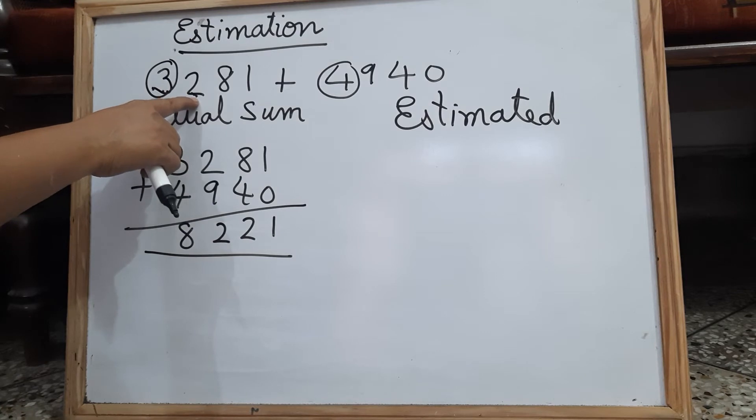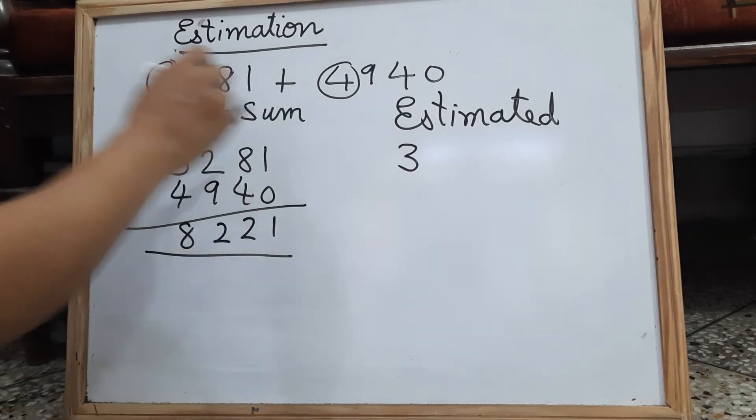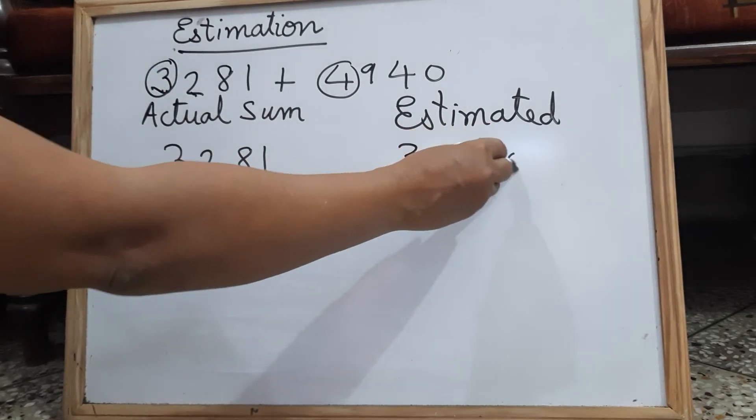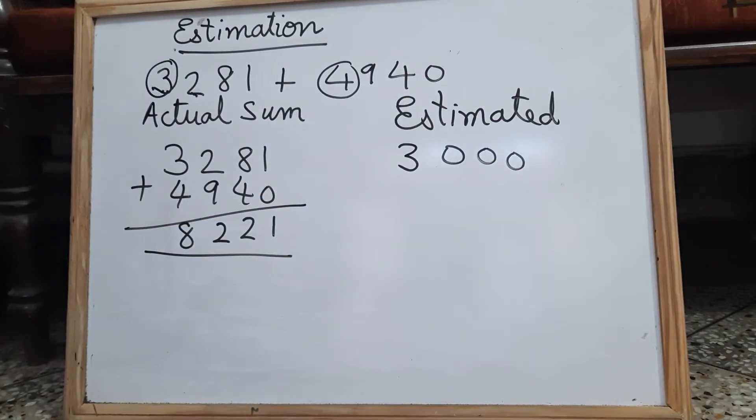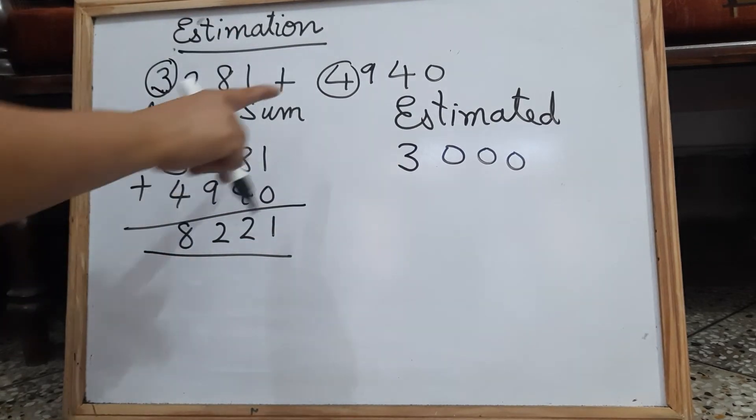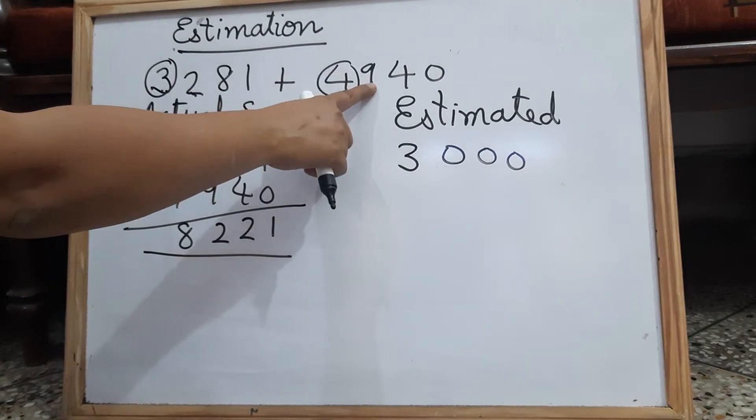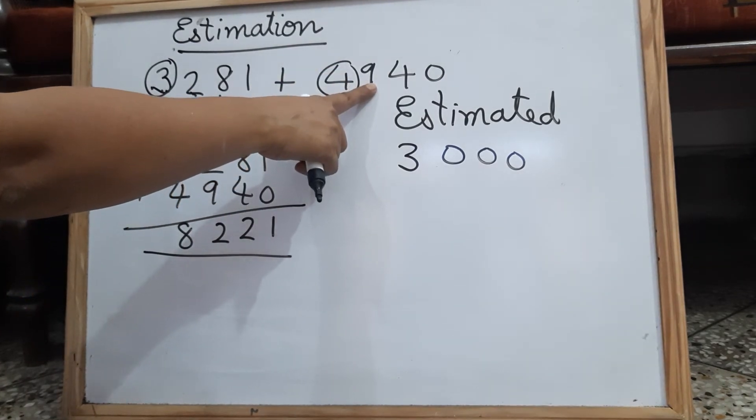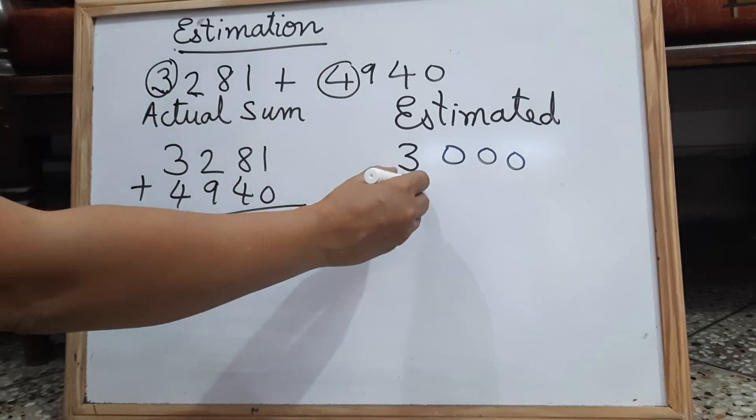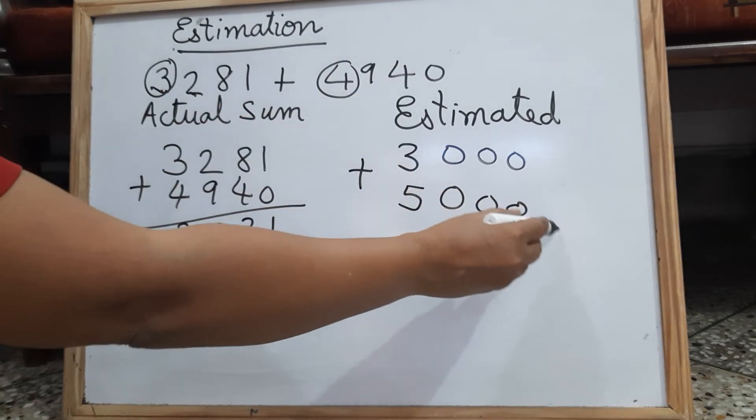So this digit is less than 5. So the required place will be the same, 3, and the rest of the 3 digits will become 0. So this is the estimation: 3,281 becomes 3,000. Coming to 4,940, the next digit is greater than 5, so in the required place plus 1 and the rest of the 3 digits will become 0.